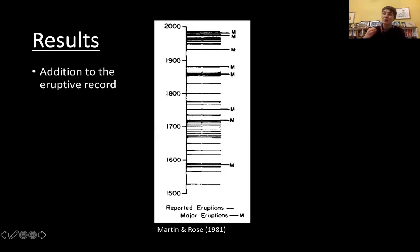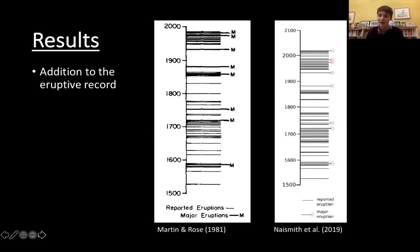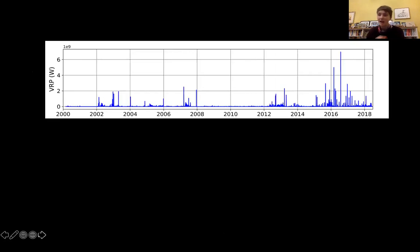The first of our results was a small addition to the existing eruptive record. This figure here shows almost 500 years worth of activity from when records began in 1524 to the late 20th century. And what we did was make a small update to that record with information on the early 21st century. In terms of thinking about scientific progress, I really liked what David Powell said at last year's VMSG conference, that it is made on walking slowly with friends.